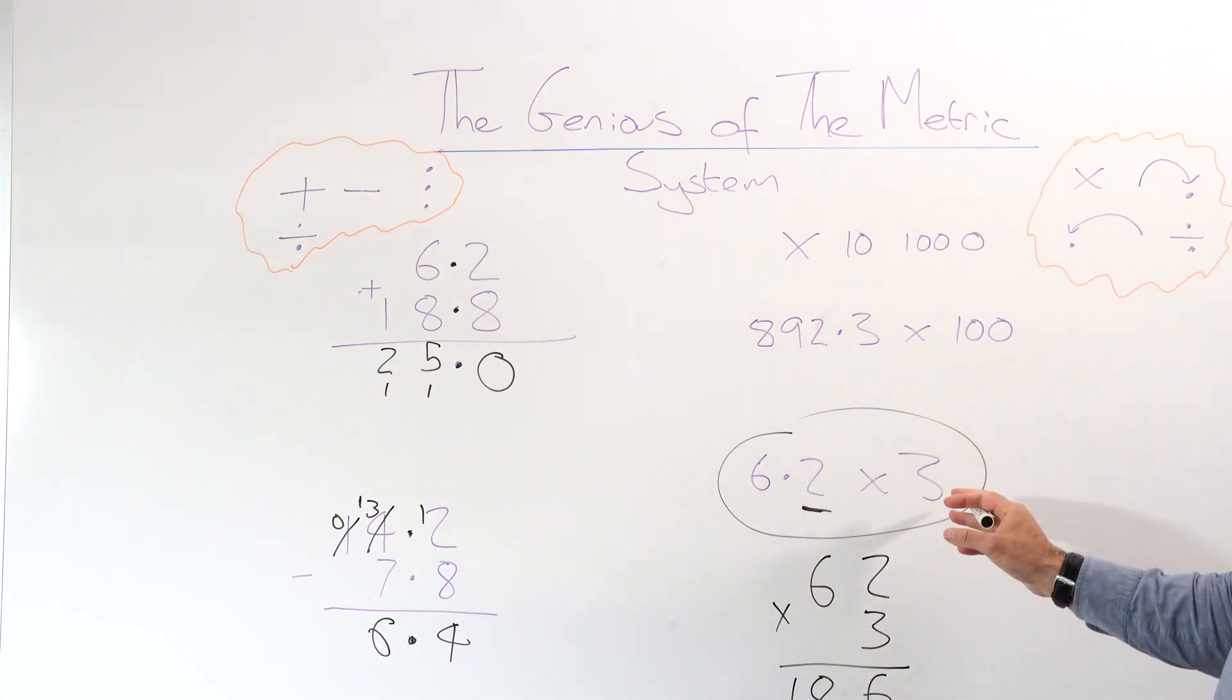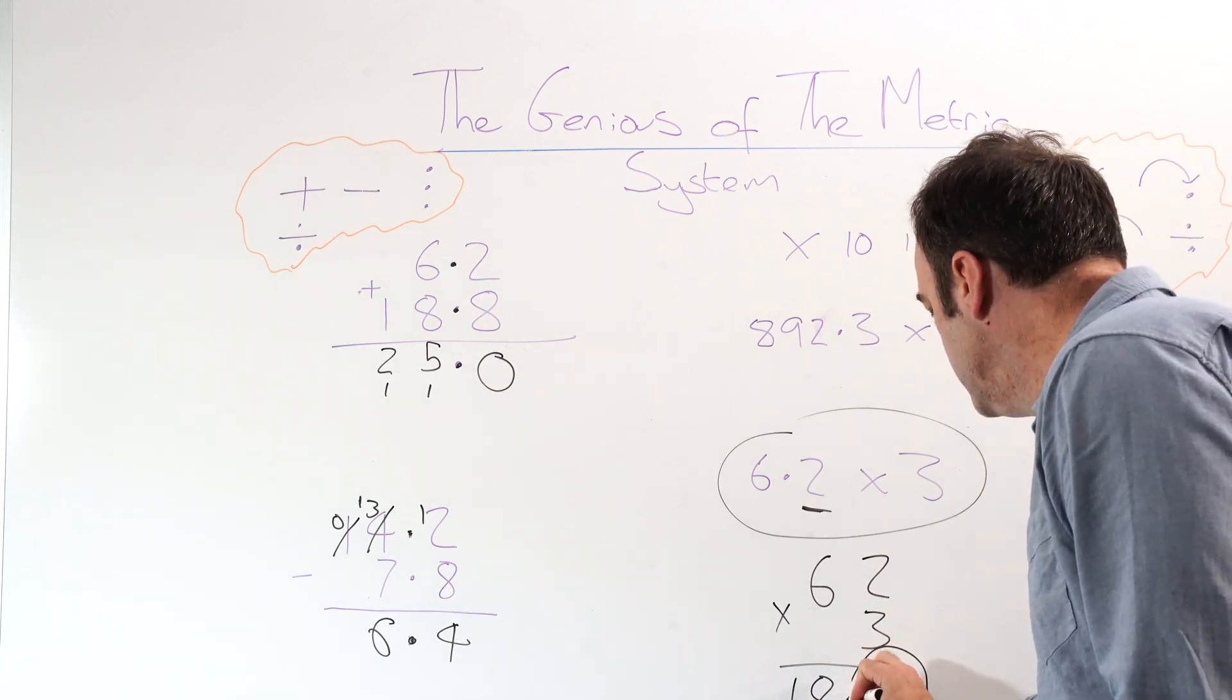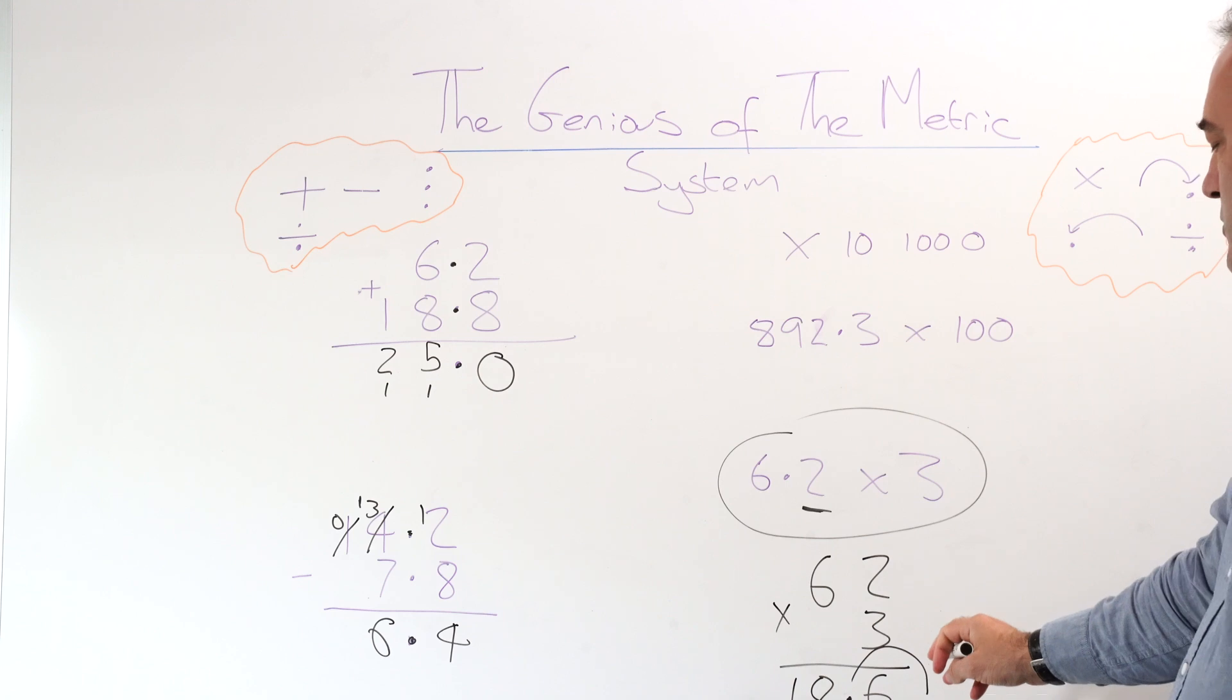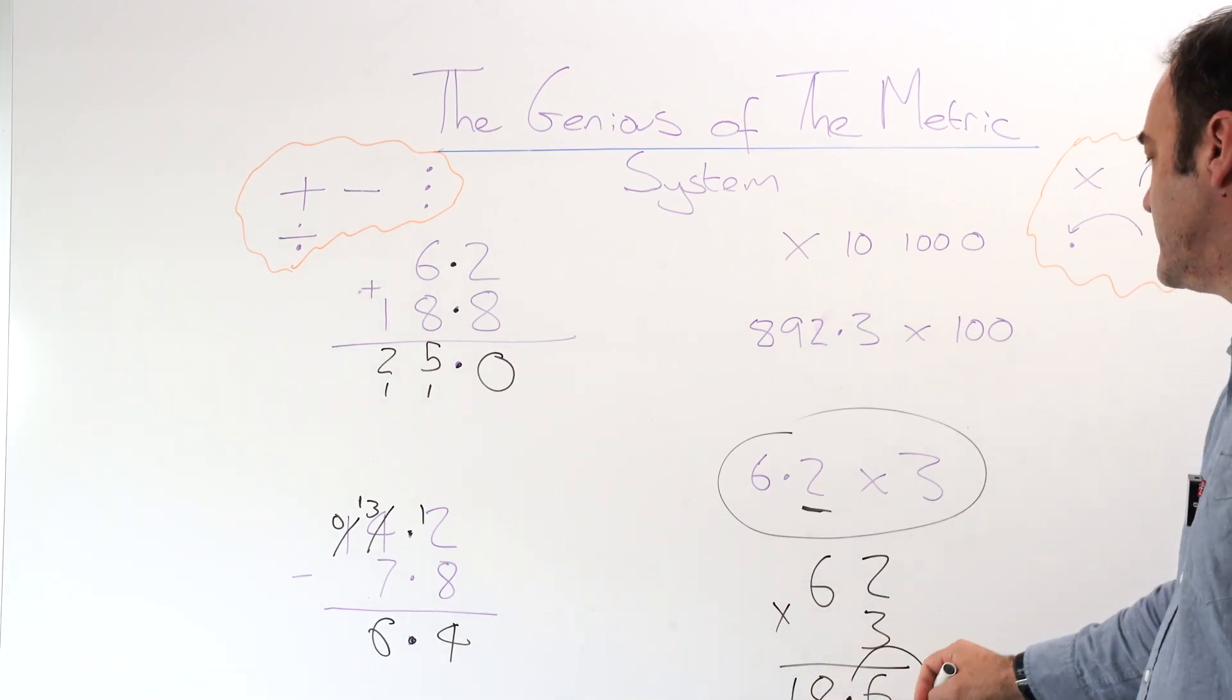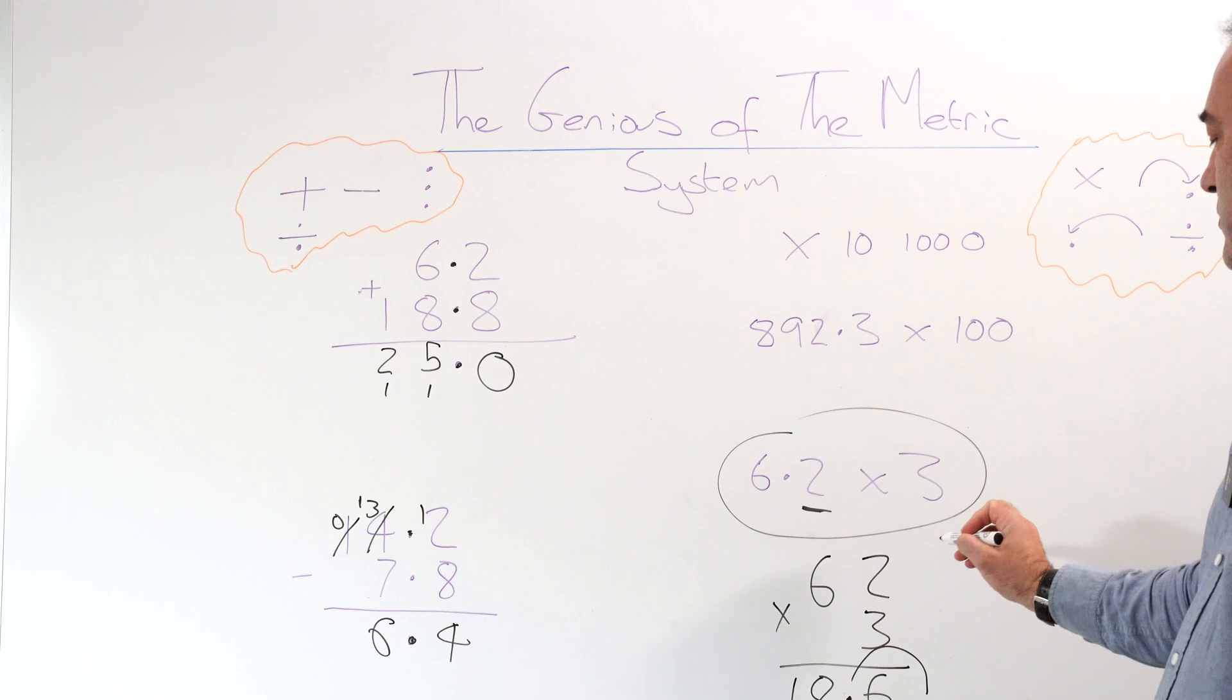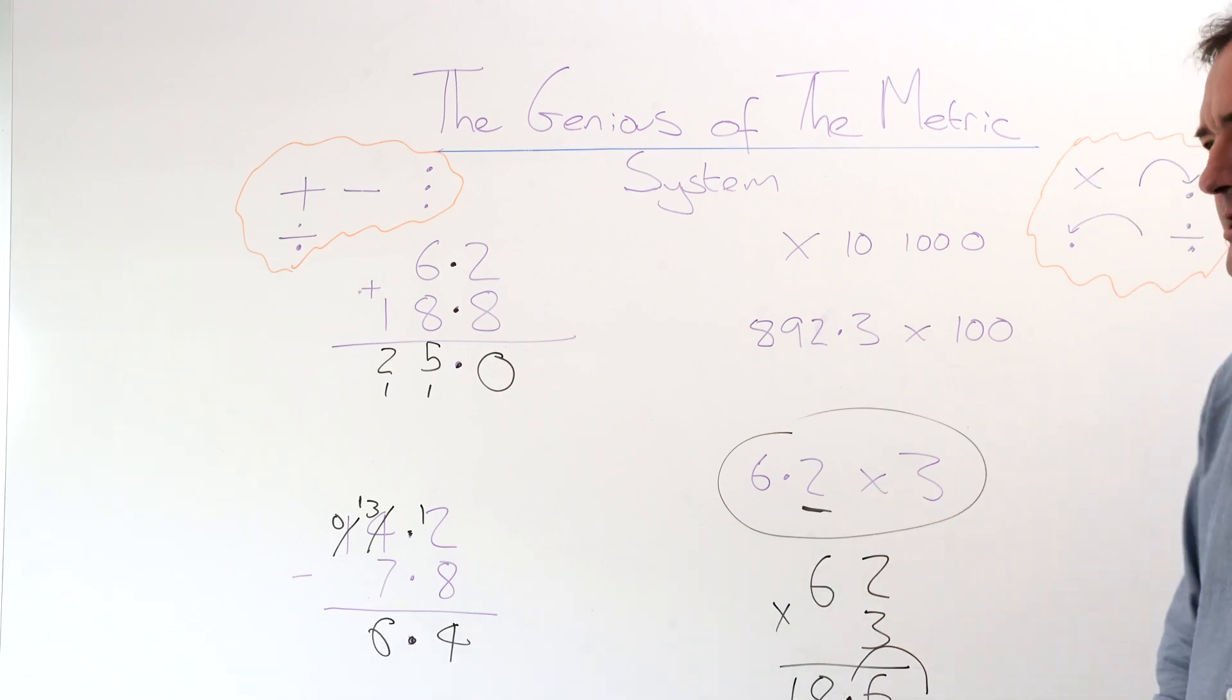Then what we do is we look at the question and say, well, how many decimal places were there? There was one. So what we do is we go from the right and we count back one bounce. If there were two decimal places here, of course we do two bounces and so on. So we end up with 18.6. So we copy the question out, write it out without, bounce it back in at the end. That's a simple rhyme that I teach kids.